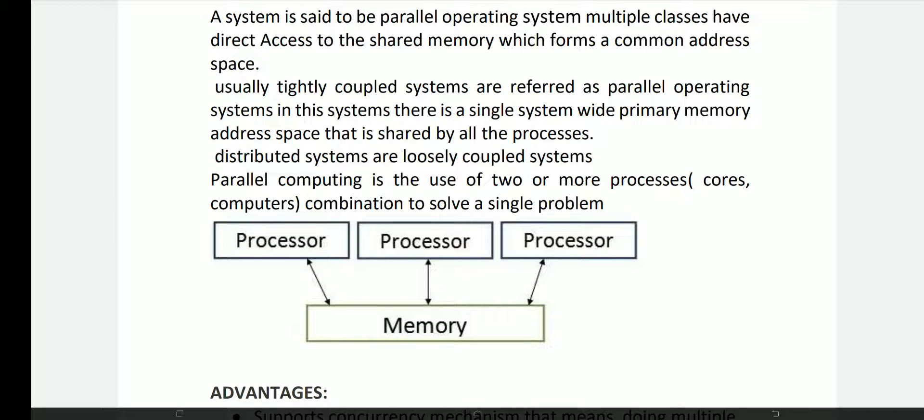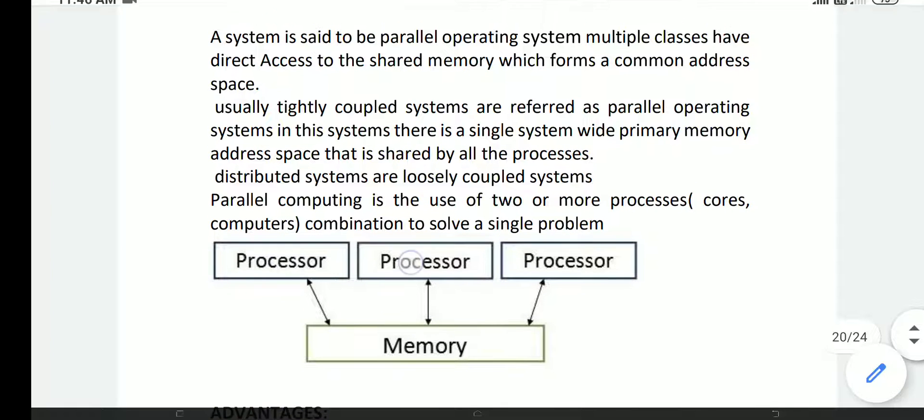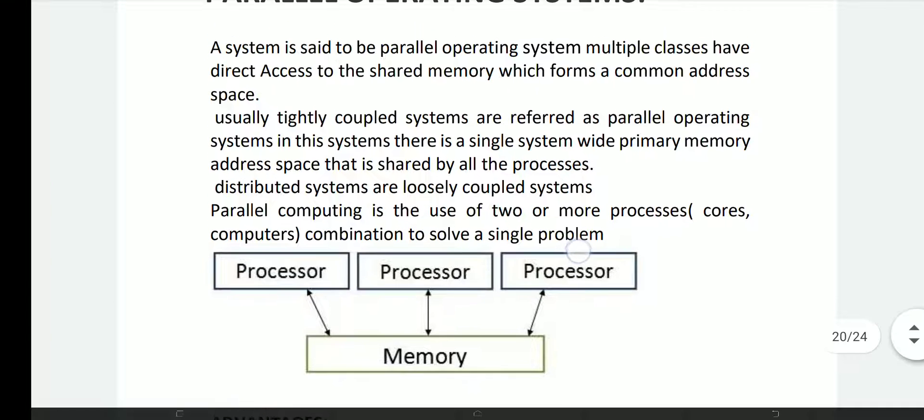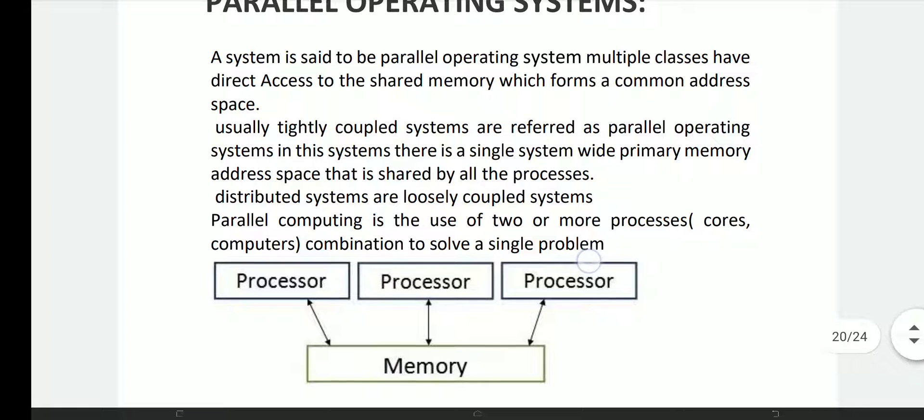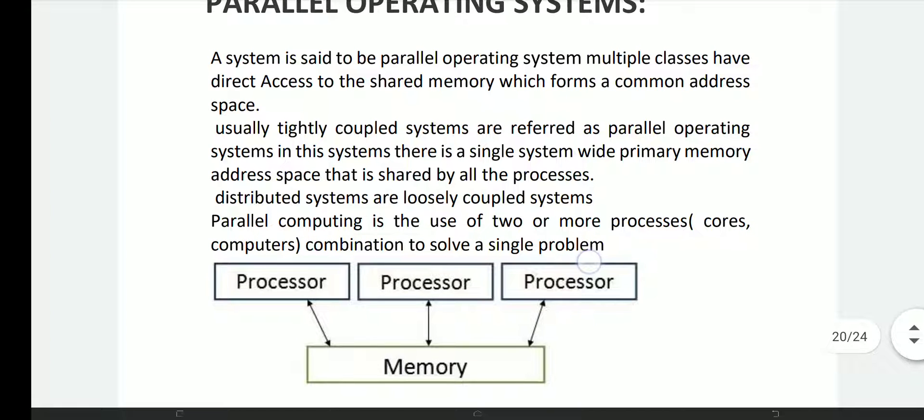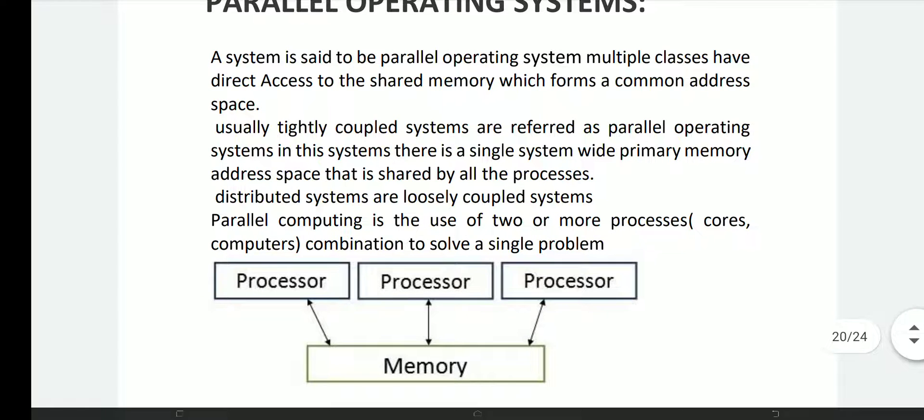The common address space in memory is shared by processor one, processor two, processor three, and so on. This common memory space is shared by all processors. These are tightly coupled systems. In tightly coupled systems, the processors are connected to the memory space.